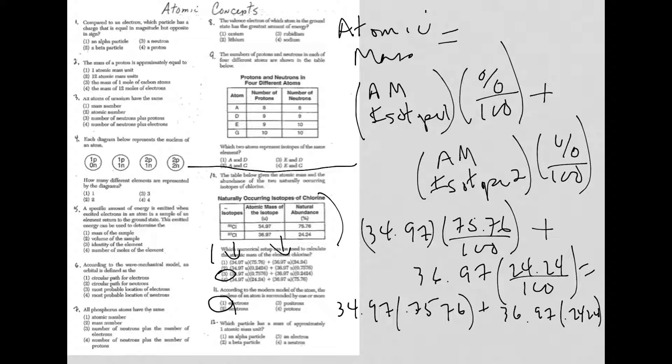Question 12: which particle has a mass of approximately one atomic mass unit? Again, something you need to know. Both protons and neutrons have one AMU. So the answer is choice four.